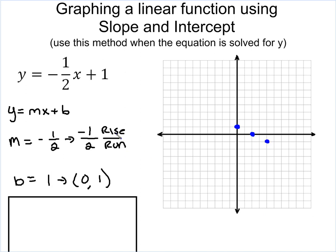If you always do your rise first, your rise is always going to tell you if you go up or down. If it's positive, you go up. If it's negative, you go down. And in that case, the run is always going to be to the right-hand side of the graph.